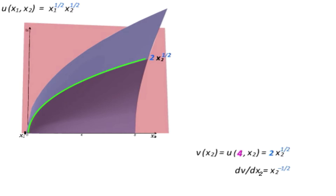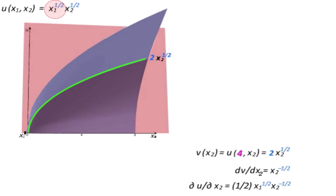More generally, without substituting a specific value in for x1, we could simply treat the utility function u as a function of a single variable x2 by treating x1 as a parameter. When we then take the partial derivative of u with respect to x2, we can treat the x1 to the 1 half term as if it was just some term a, for instance. So as we take the derivative with respect to x2, we take the exponent of x2 — 1 half — times x1 to the 1 half, which we just treat as a parameter, times x2 to the minus 1 half, just as if we took a derivative of a single variable function that's a function of x2.